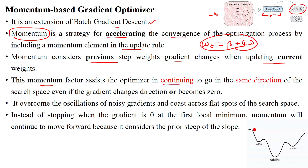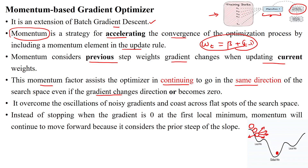This momentum factor keeps the optimizer continuing to go in the same direction. When your gradient is available and moves step by step in a direction, it may have more than one orientation — multiple directions, flat directions, or various angles — during the gradient computation.